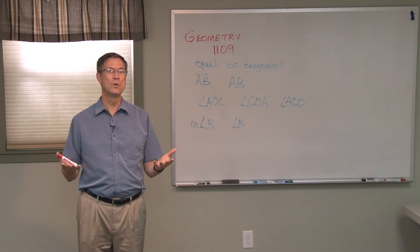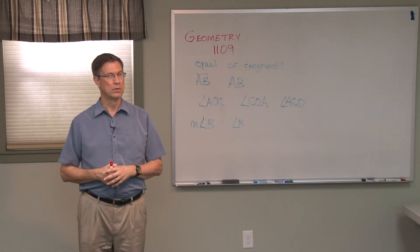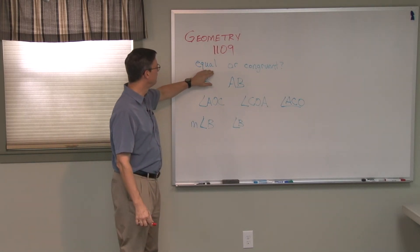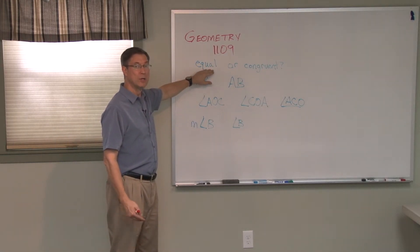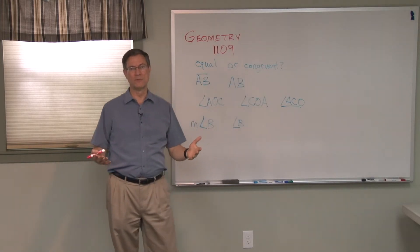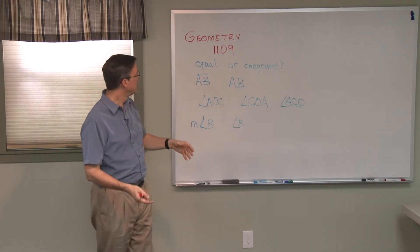We say they're equal because we're talking about the degrees in the triangle. So equal has to do with measuring a shape and getting a number. Congruent just references the fact that the shapes are the same.